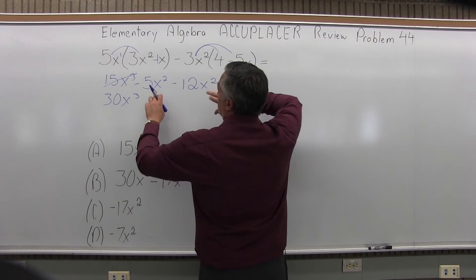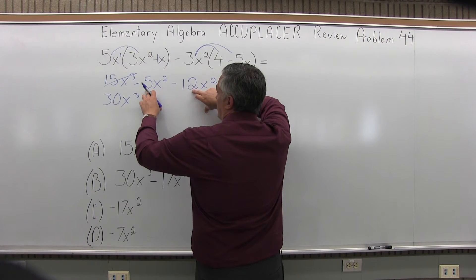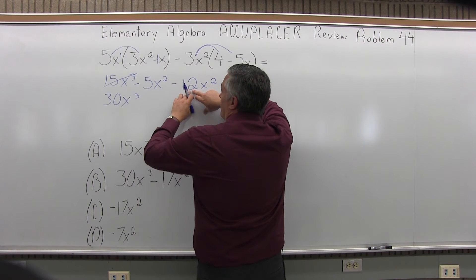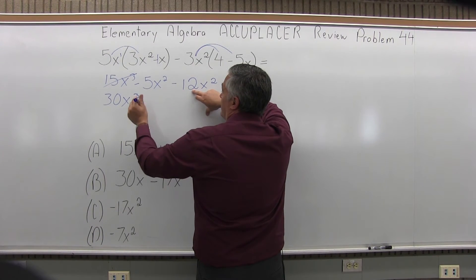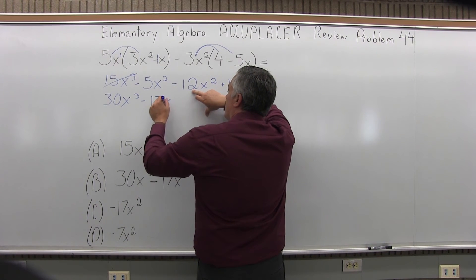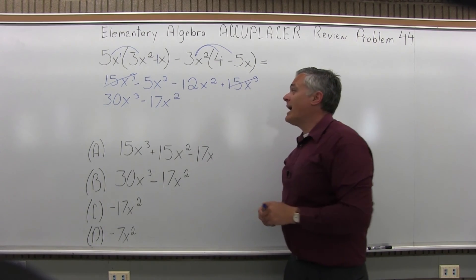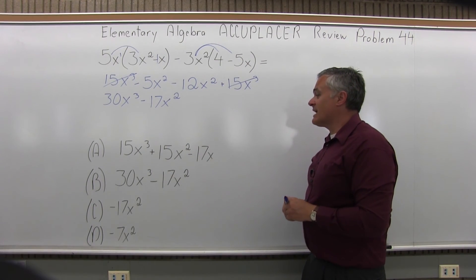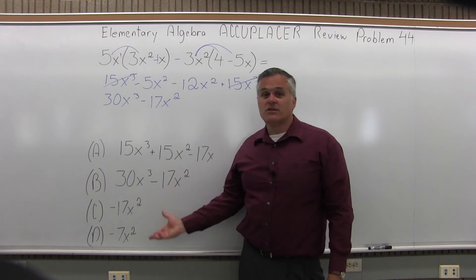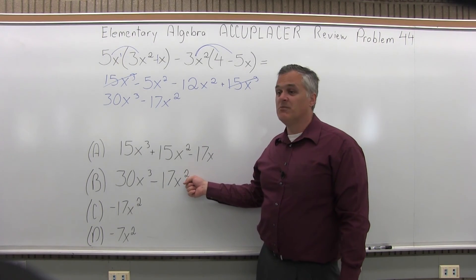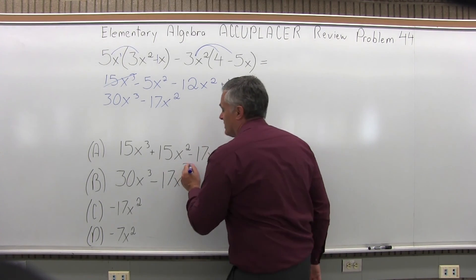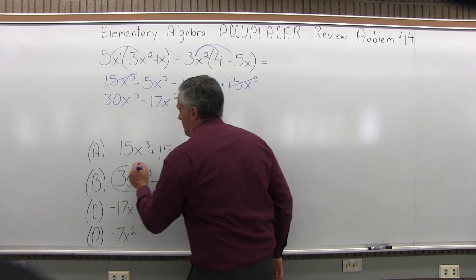Now the x squareds can be combined also. So I have negative 5x squared and negative 12x squared. So negative 5 and negative 12 is negative 17x squared. So I get an answer of 30x to the third minus 17x to the second. And as I look at my list of possible options, I do have a perfect match at option B. So the answer to this problem is B.